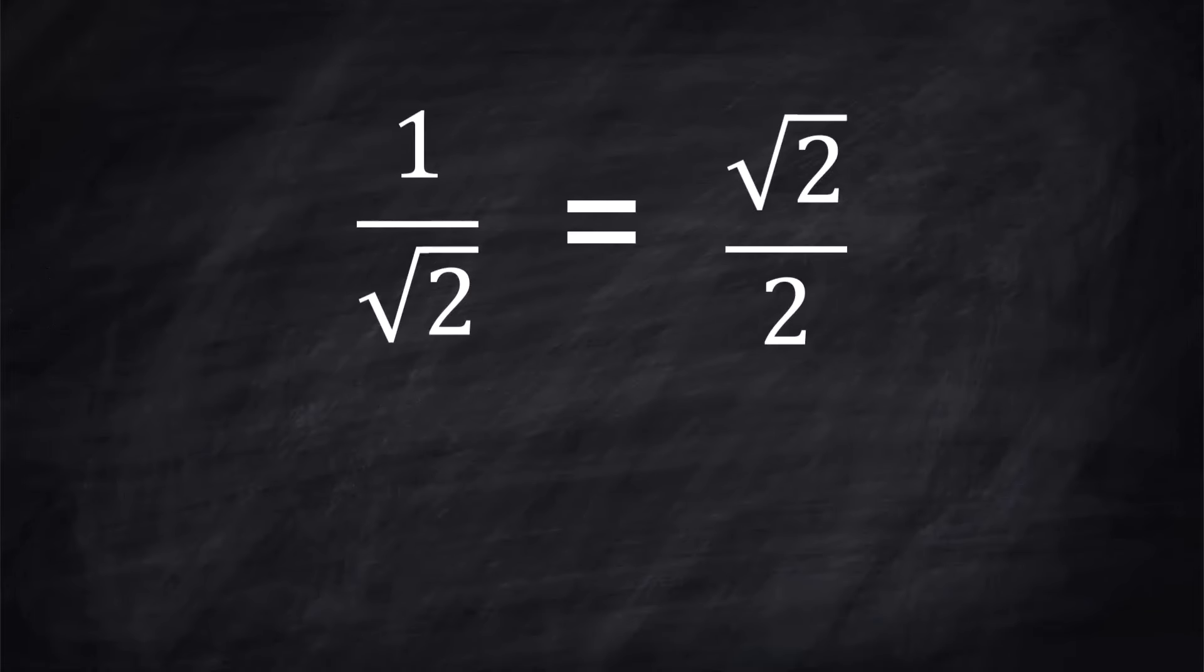Guess what? These two things are equal, but in math, this one is bad, but the process of changing the first one into the second one is called rationalizing a denominator, and you are here to learn that. So let's go.